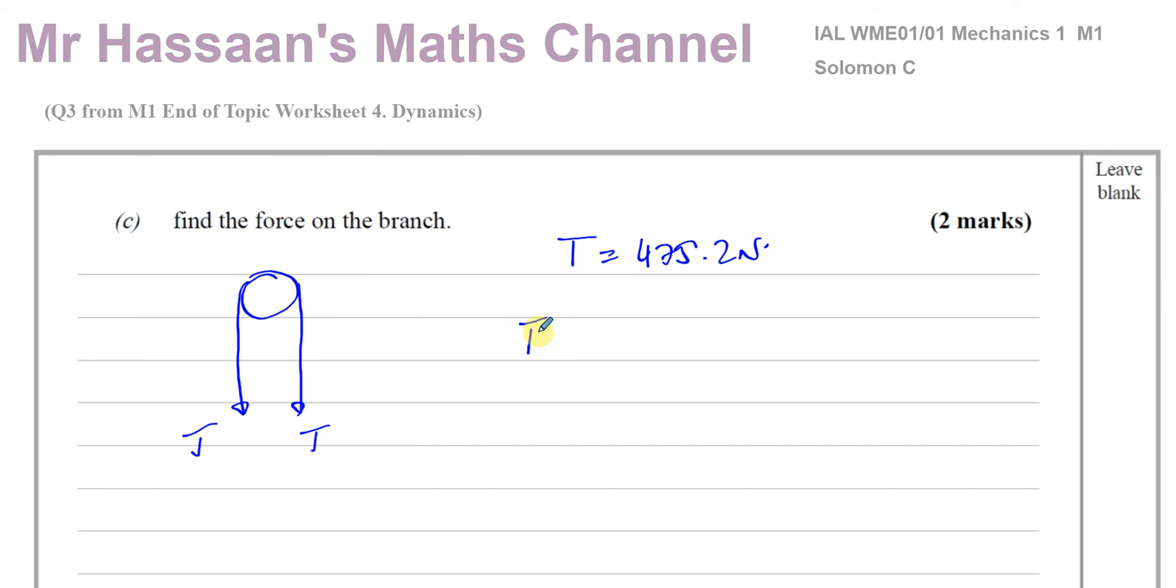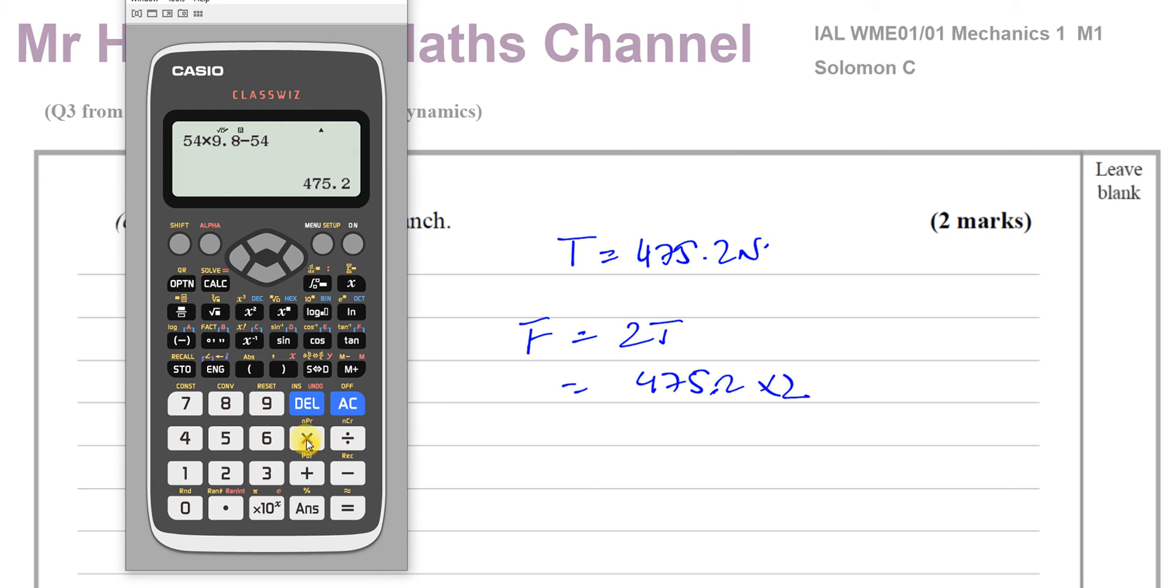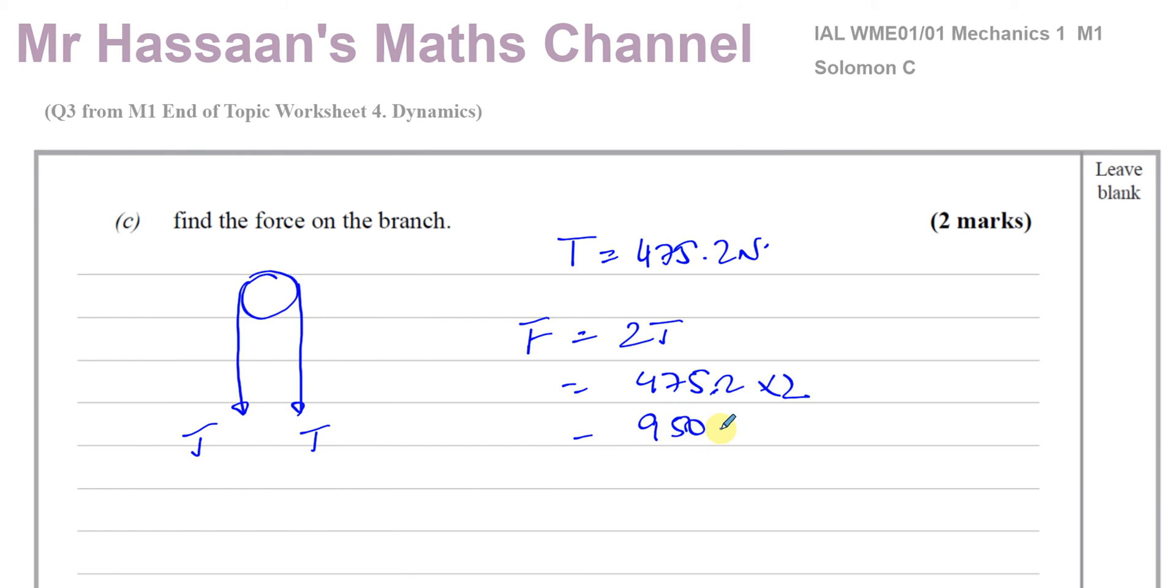So the force on the branch is going to be equal to 2 times the tension, which is 475.2 times 2. Multiply this by 2, and you get 950.4 newtons. You're going to round that. That's going to become 950 newtons to 2 and 3 significant figures. That's the answer to part C.